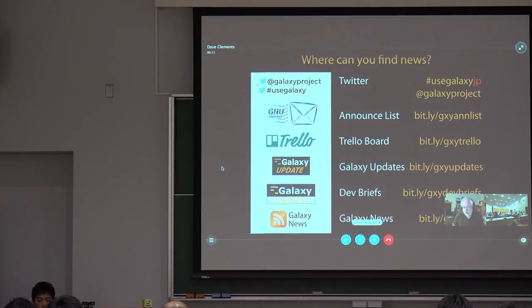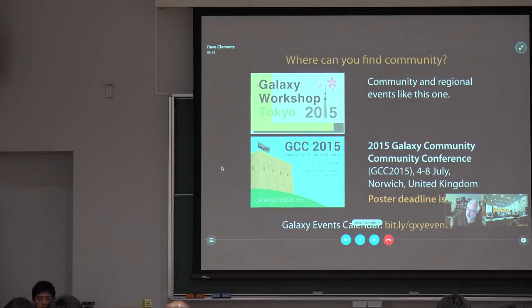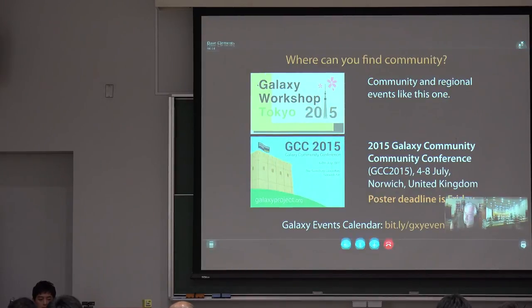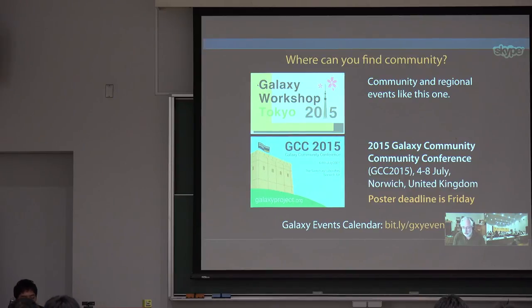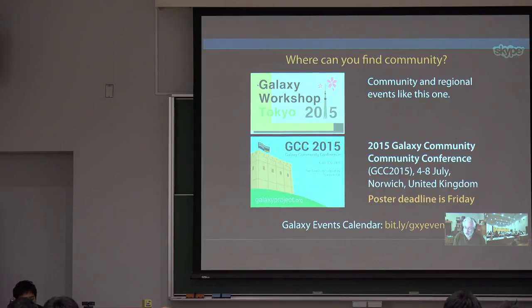The third question is: where do you find community? I would really like to stress that a very popular place for finding community is where you are right now. Community and regional events just like this one — there are lots of these around the world. This one is particularly successful, drawing 100 people on its first meeting. That is very impressive.